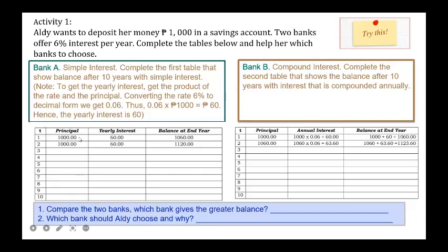For year 1, the principal is 1,000. The yearly interest is 60 (which is 6% of 1,000). The balance at end of year 1 is 1,060. For year 2, another 6% interest is 60 pesos, so 1,060 + 60 = 1,120. For year 3, the principal remains 1,000, yearly interest is still 60, and 1,120 + 60 = 1,180. You have to complete this table.